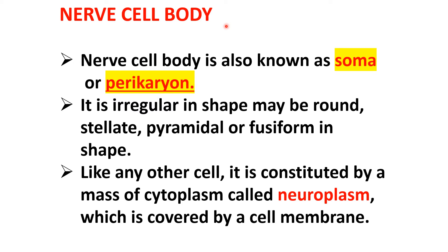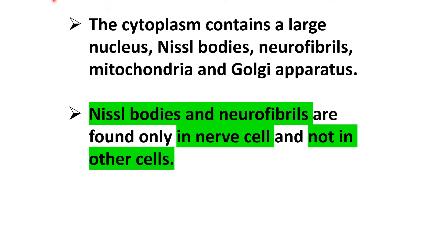The cell body is also known as soma or perikaryon. It is irregular in shape and may be round, stellate, pyramidal, or fusiform. Like any other cell it is constituted by a mass of cytoplasm called neuroplasm, which is covered by the cell membrane. The cytoplasm contains a large nucleus, Nissl bodies, neurofibrils, mitochondria, and Golgi apparatus. Nissl bodies and neurofibrils are found only in the neuron cell, not in other cells.